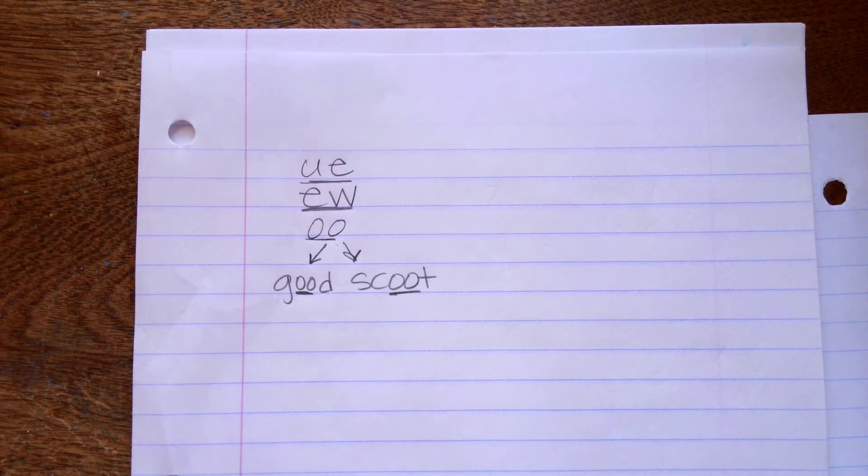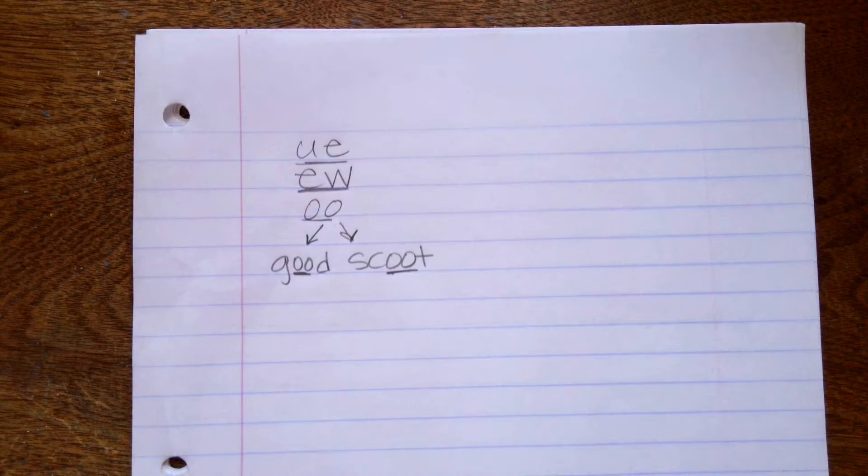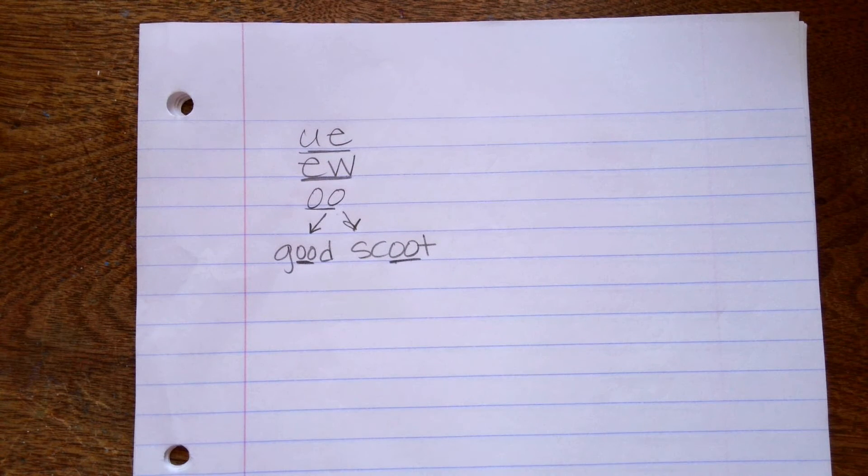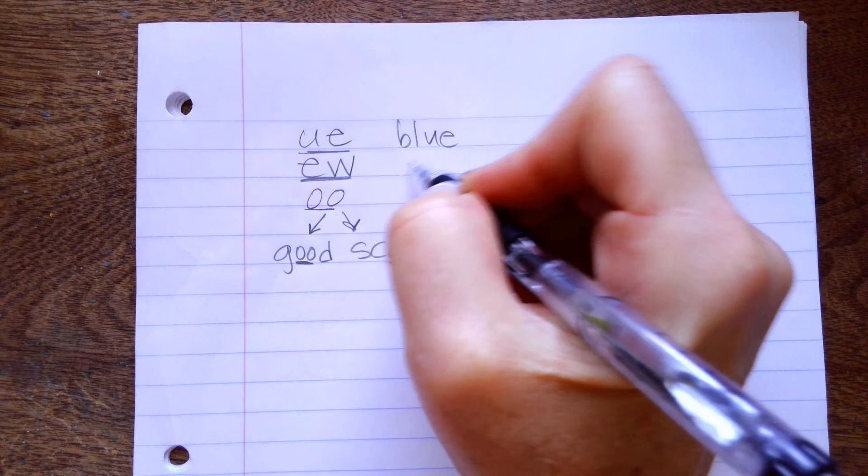So sometimes when you see an OO, you actually have to say, is it OO or is it OO? But that's okay. And you can try both ways in the word. Exactly. To see which one sounds right.